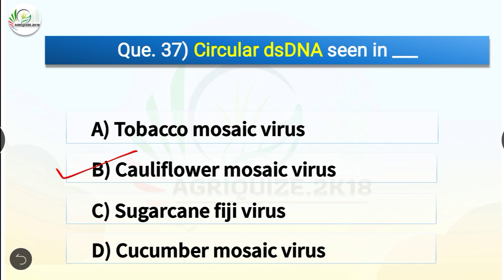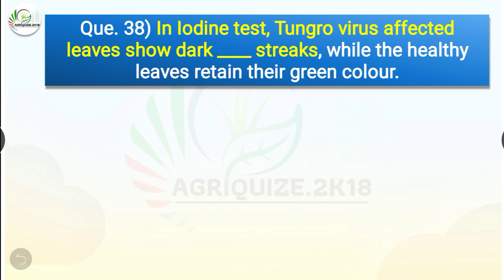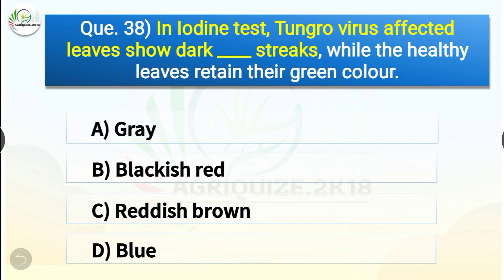Question number thirty-eight: In the iodine test, Tungro virus affected leaves show dark dash streaks while healthy leaves retain their green color. The options are grey, blackish red, reddish brown, or blue. The correct answer is option C, reddish brown. In the iodine test, Tungro virus affected leaves show dark reddish brown streaks while healthy leaves retain their green color.